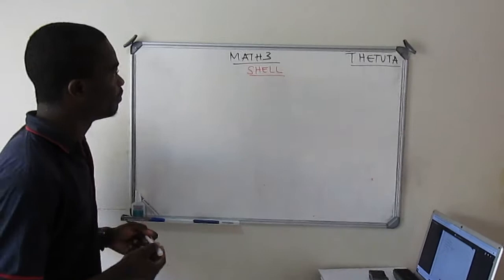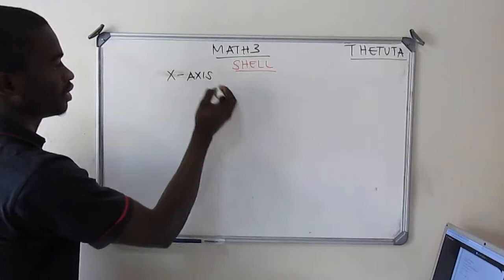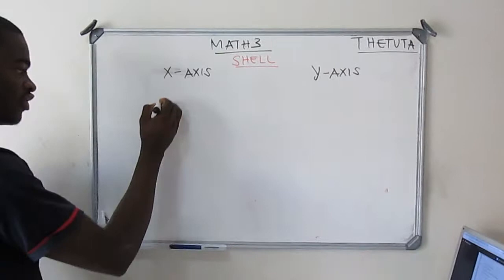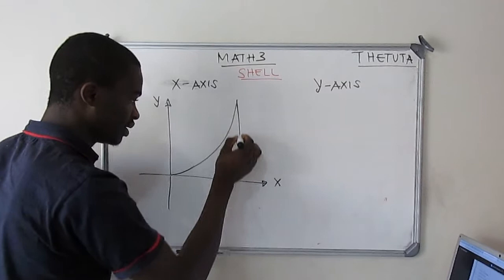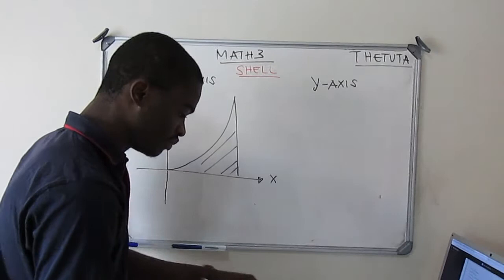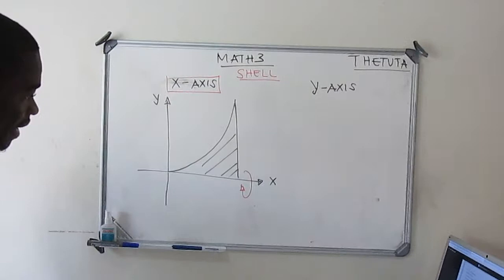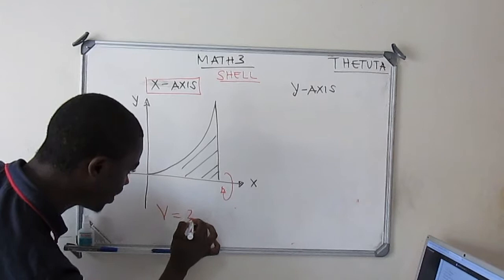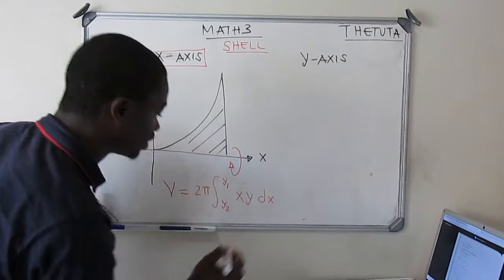With the shell method, it's all about two axes. Our body is going to rotate on two axes — the x-axis and the y-axis. So let's say we have a coordinate with x and y, and we have a specific body. If they say this body is rotating on the x-axis, when solving shell method the volume is given by two pi times the integral from y1 to y2 of x times y dy.